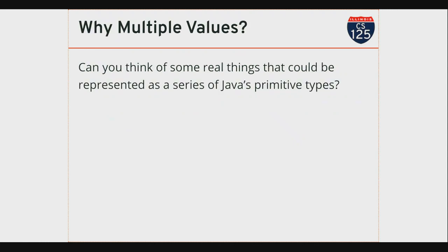What I really want to do is work with an arbitrary number of values — with the stipulation that they all have to be of the same type. So what could we do if we could take those Java primitive types and instead of working with one at a time, work with a bunch of them at a time? What new kinds of information could we represent? This is a huge explosion in our ability to work with data.